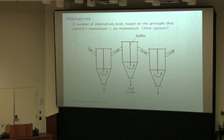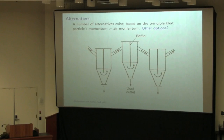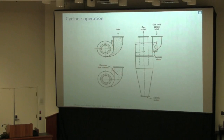Other options to de-dust air include filters — the classic one at home is the furnace filter. There are also electrostatic precipitators, where you apply an electric current and preferentially attract the solid particles. There are at least five or ten other ways of removing dust from air, but cyclones are taking preference as a unit just because they're so easy to operate and relatively inexpensive. There are no moving parts.